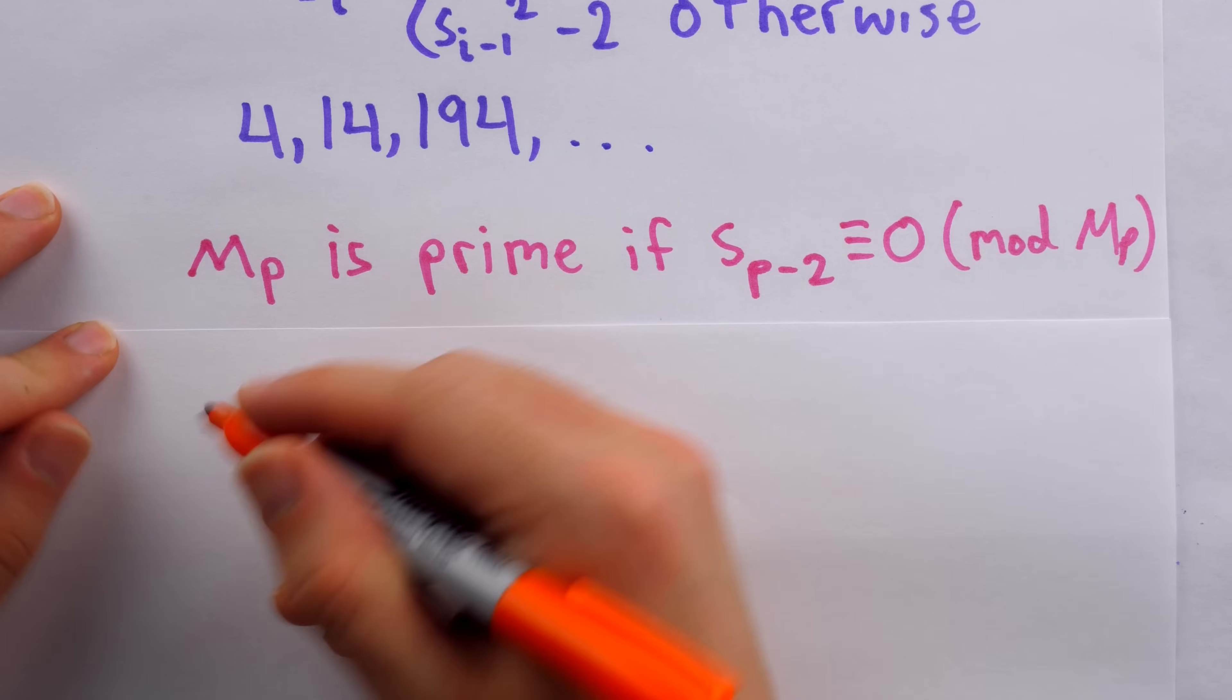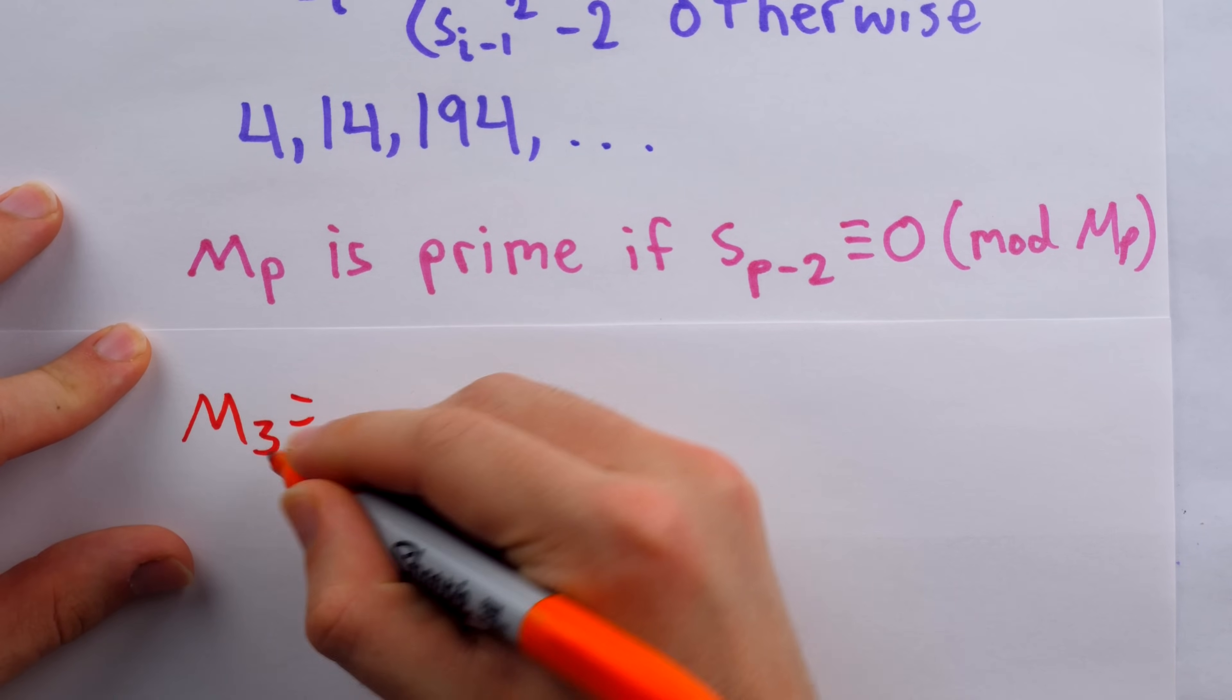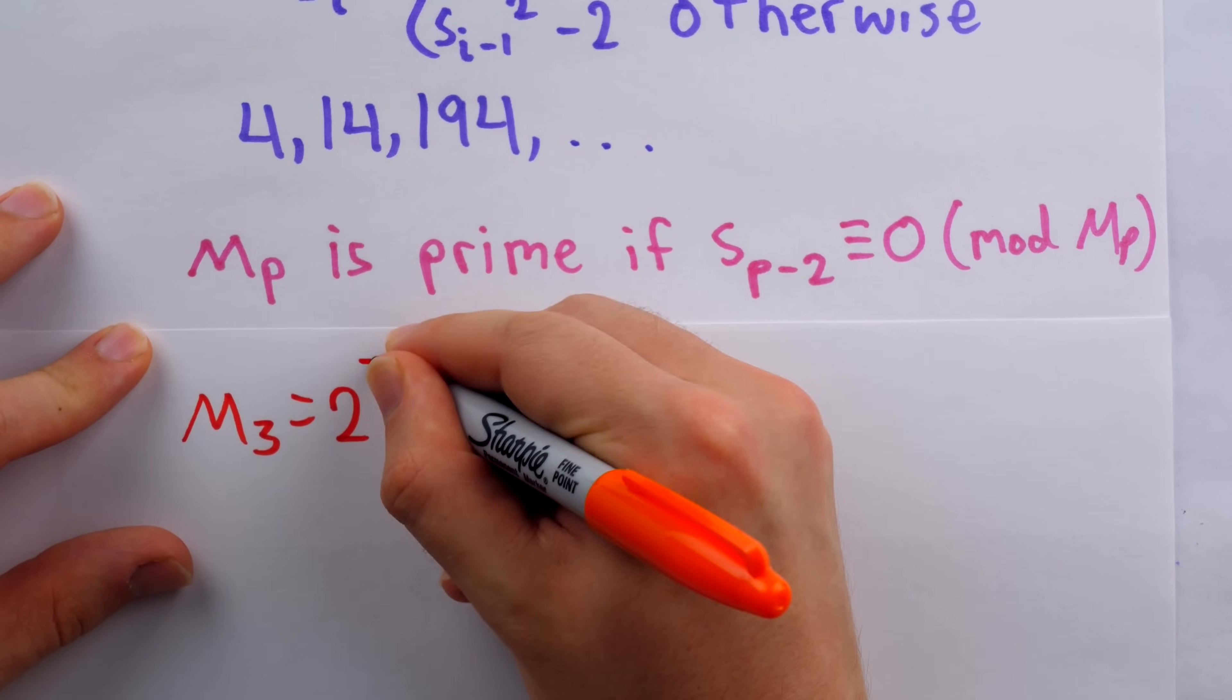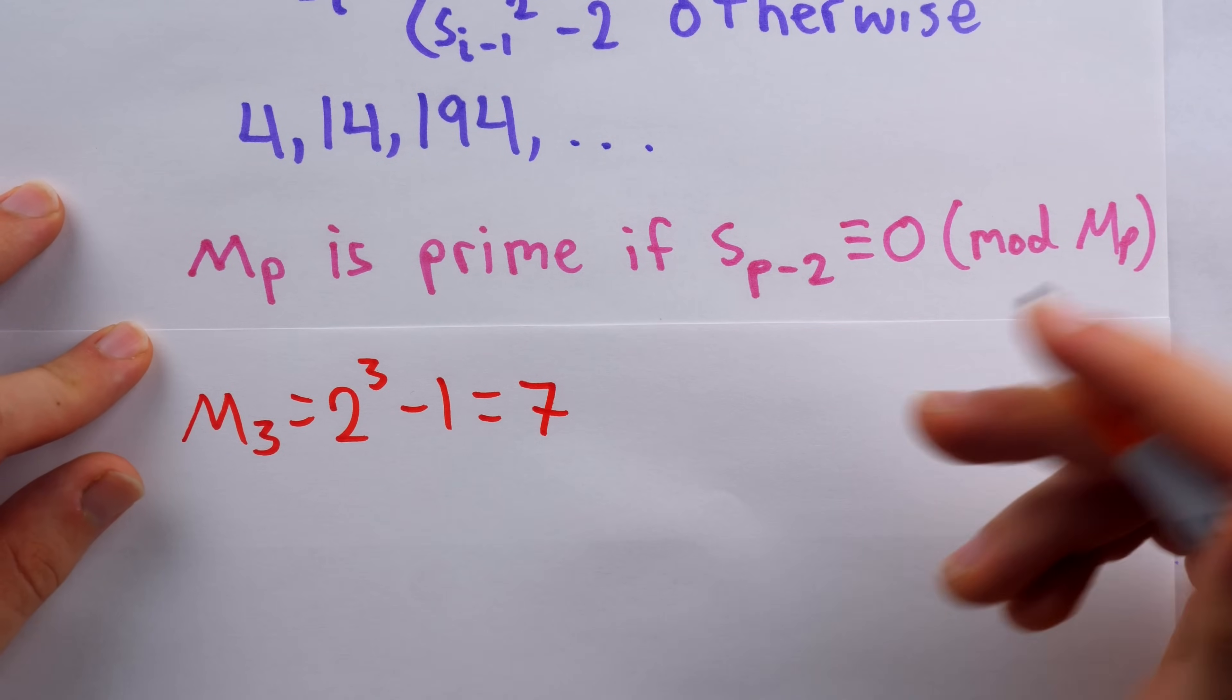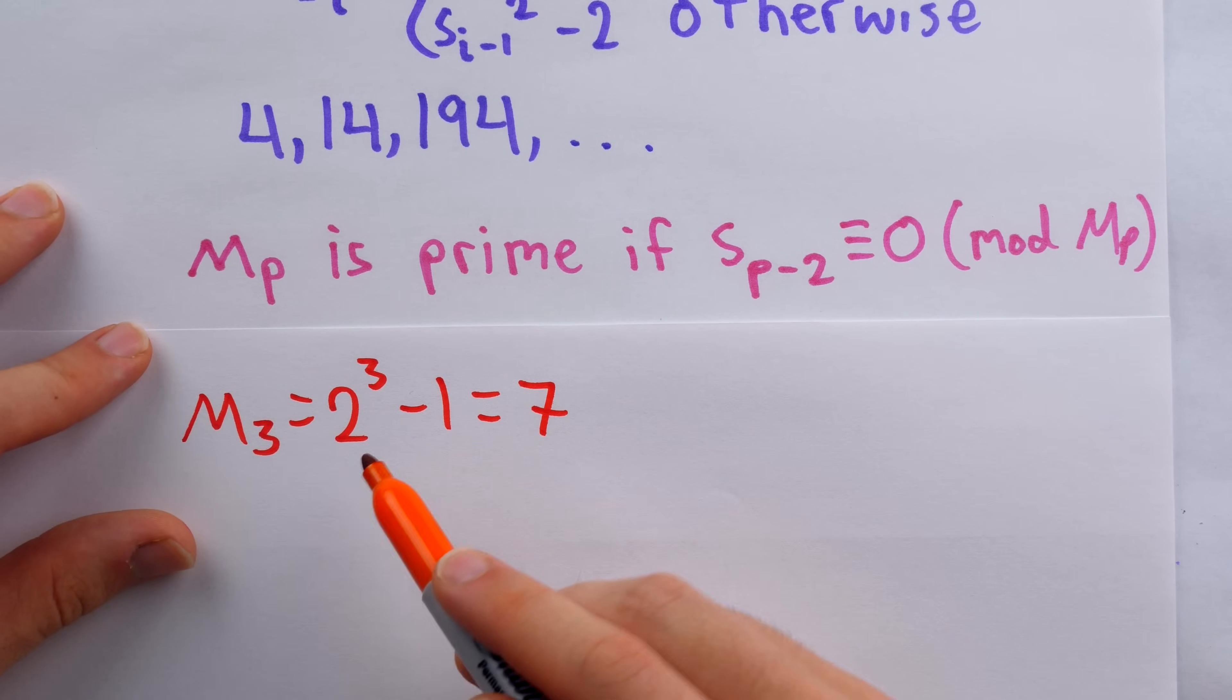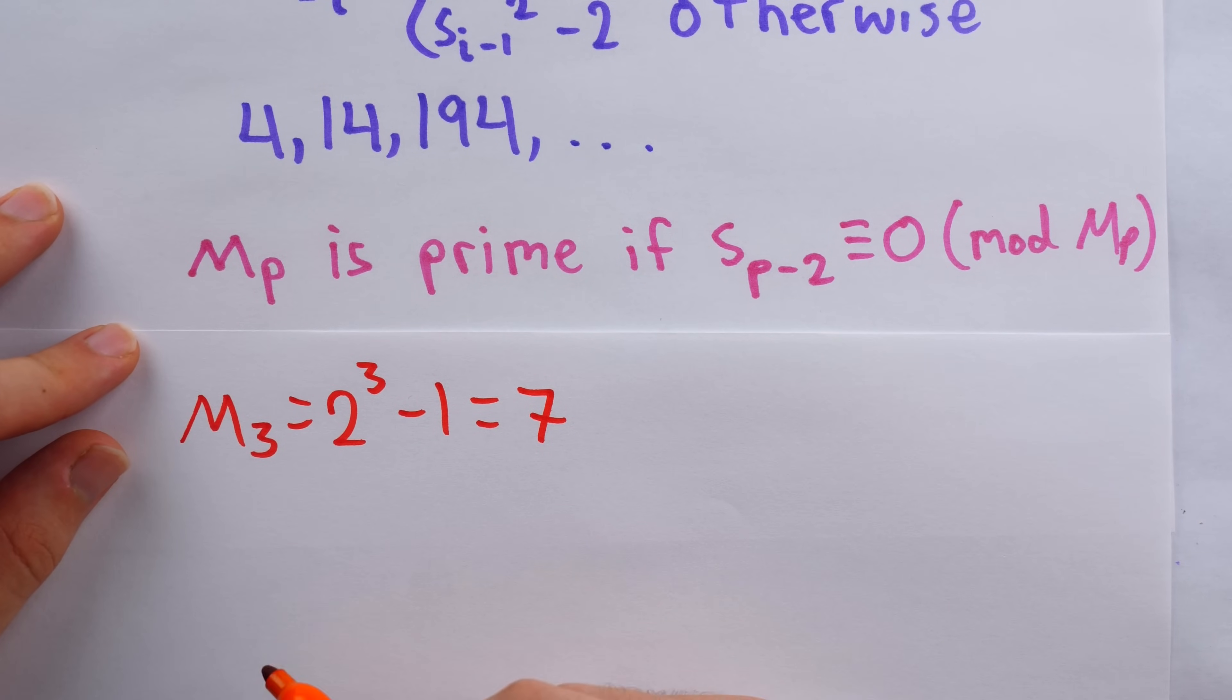For a small example, with very manageable numbers, we can look at the Mersenne prime M_3. Three is prime, so this number is two to the three minus one, which of course is eight minus one, which is seven, which is prime. So this is a Mersenne prime, and we could use a Lucas-Lehmer test to confirm that this number is prime.